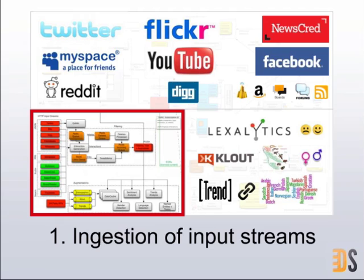Recently we started expanding outside social media to news agencies as well. We get data from Thomson Reuters, Associated Press, Al Jazeera, and I think we cover over 700 major newspapers around the world — anything from the New York Times to the Chicago Tribune. So you can have the news and then all the buzz around the news — the source and the comments about the source.